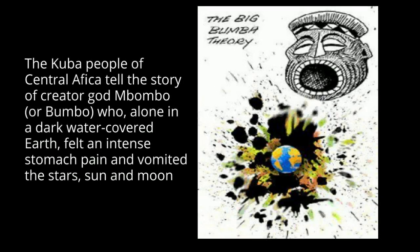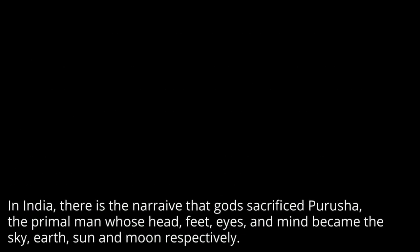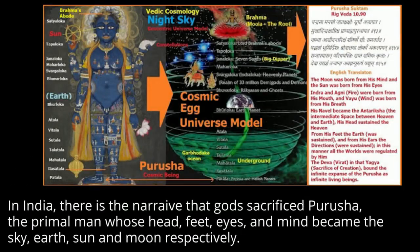The Kuba people of Central Africa tell the story of Creator God Bumba, who, alone in a dark water-covered earth, felt an intense stomach pain and vomited the stars, sun, and moon. In India, there is the narrative that God sacrificed Purusha, the primal man whose head, feet, eyes, and mind became the sky, earth, sun, and moon, respectively.